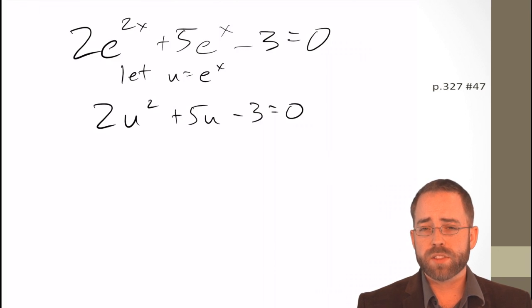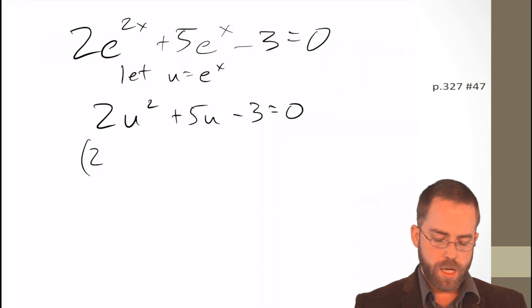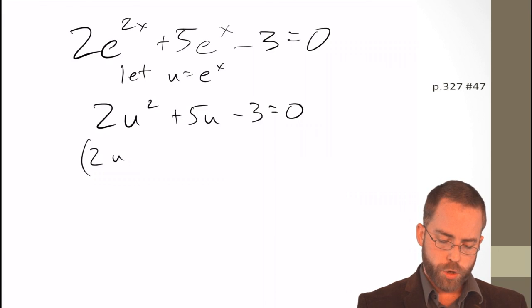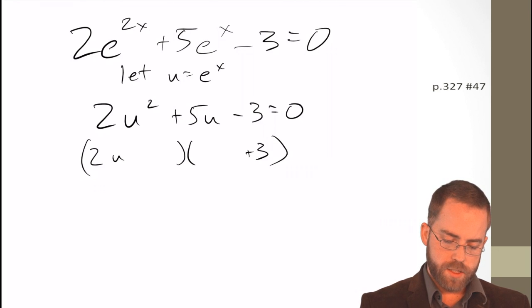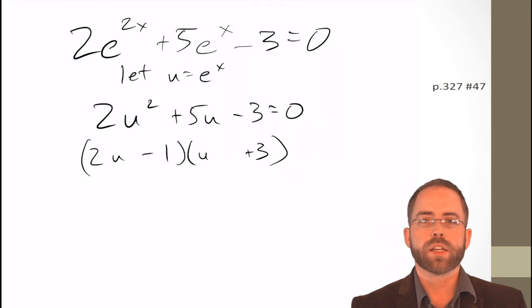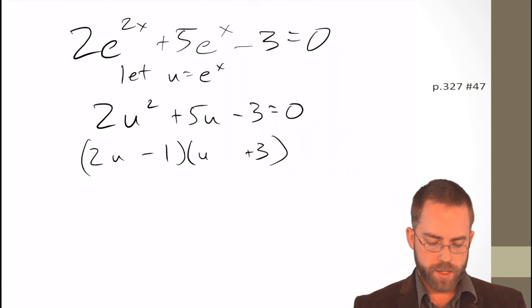You could do guess and check. You could split the middle. I happen to be able to see offhand that 2 and 3 make 6. And then I just need to take away 1 from that and I'll get what I wanted. That is, yeah, positive 6 minus 1 is 5. So, that works.